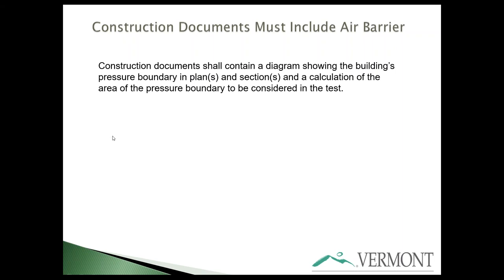As part of that, construction documents shall contain a diagram showing the building's pressure boundary — the air barrier layer in plan and section — and a calculation of the pressure boundary area to be used in the test. Essentially, you must provide the square footage of the air barrier that the blower door test will be testing against. It is more accurate to have this in the construction drawings than to ask a blower door technician to measure it on site.